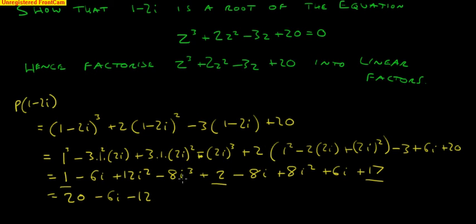8i cubed, i squared is minus 1 times that gives me plus 8i. Then we've got the minus 8i. i squared is minus 1 so that gives me minus 8 plus the 6i.